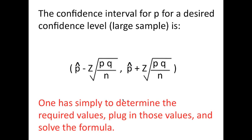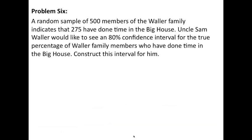One has simply to determine the required values: p hat, z, p, q, and n, plug them in and solve the formula. Let's look at this problem just a minute. A random sample of 500 members of the Waller family indicates that 275 have done time in the big house. Uncle Sam Waller would like to see an 80% confidence interval for the true percentage of Waller family members who have done time in the big house and construct this interval for him.